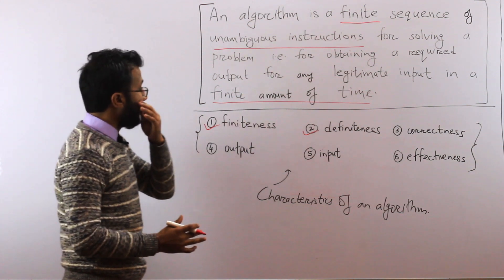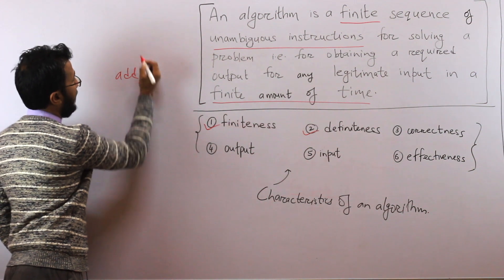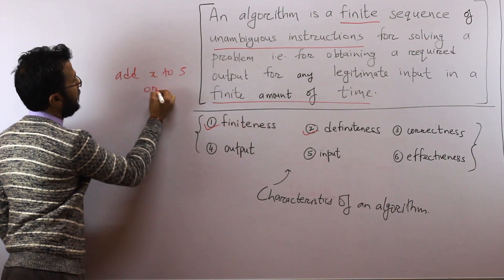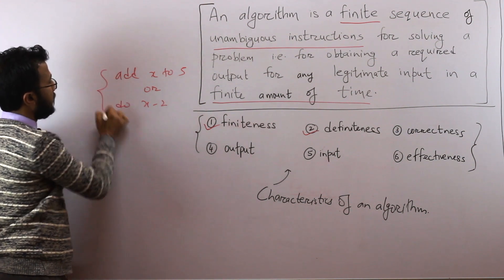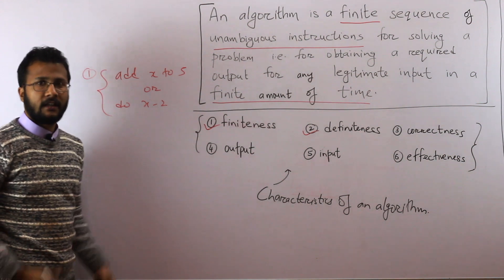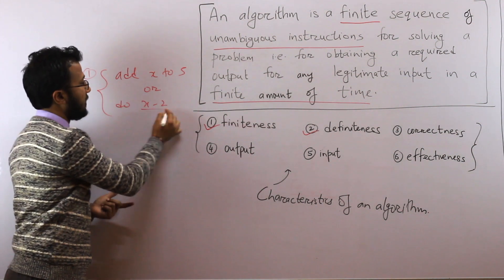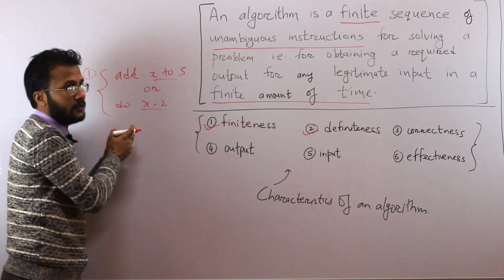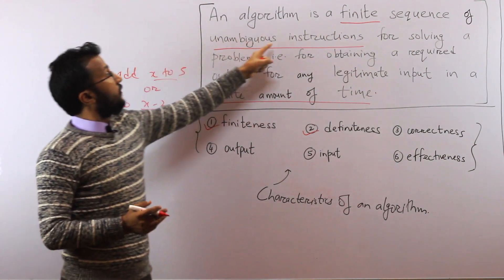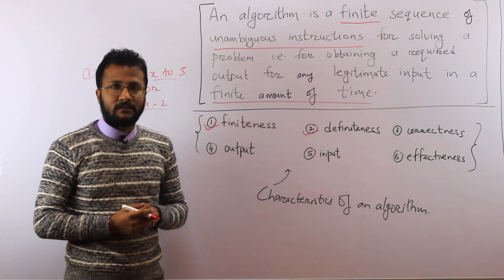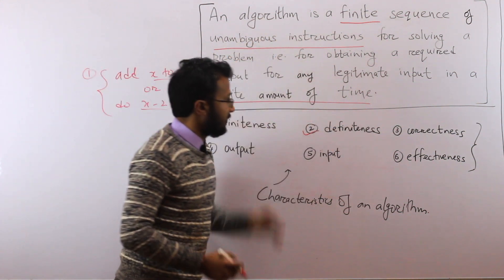For example, you can't write an instruction like 'add x to 5 or do x minus 2.' The computer will be confused whether to add x to 5 or to do x minus 2 — that kind of instruction is ambiguous. Instructions in an algorithm should be very clear. That is what unambiguous instruction, also called definiteness, means.